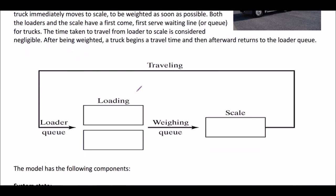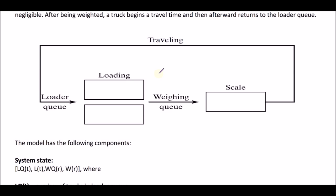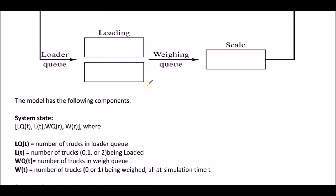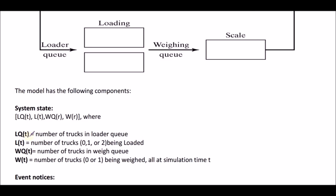Now let's look at how we solve these things. First, we need to break the model into simpler components. The first component is the system state, which indicates what state the system is currently in. There are four state variables. The first is LQ(t), the number of trucks in the loader queue. The next is L(t), the number of trucks currently being loaded. Since we have two loaders, L(t) can be 0, 1, or 2.